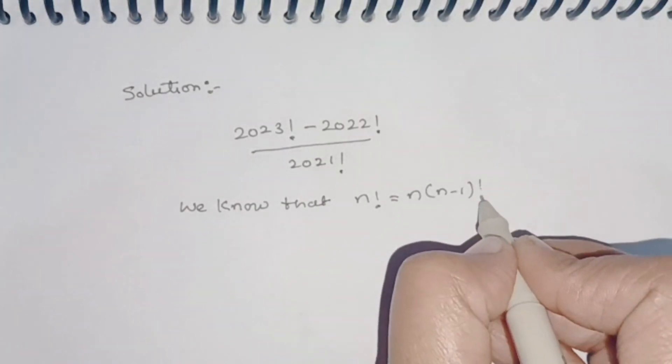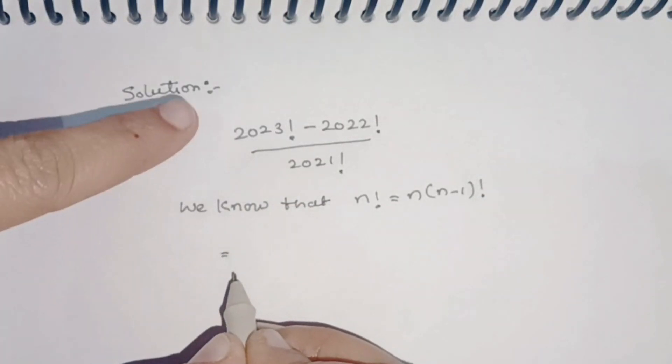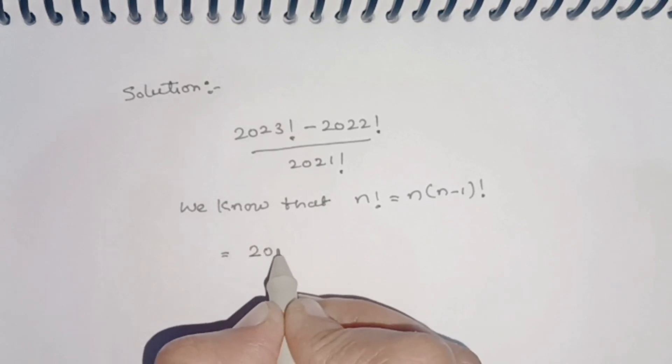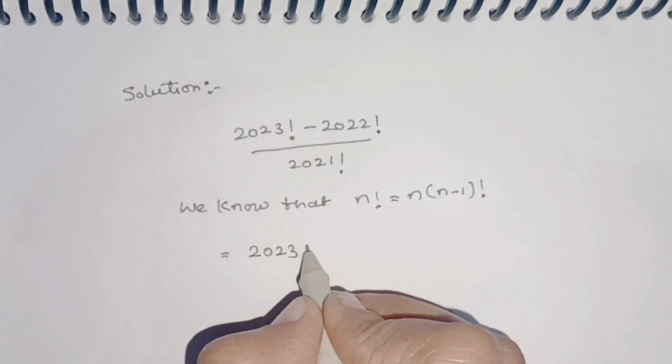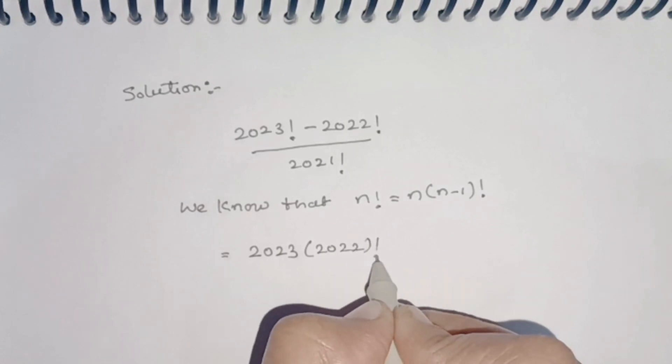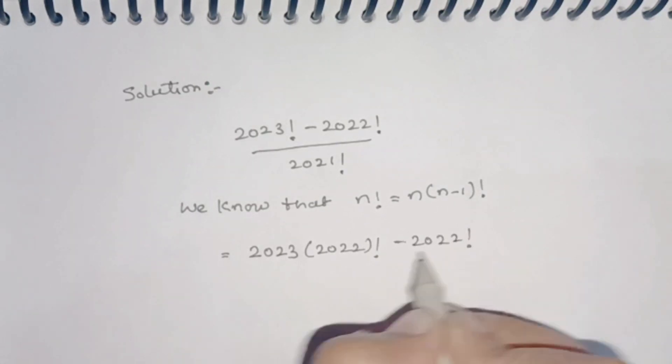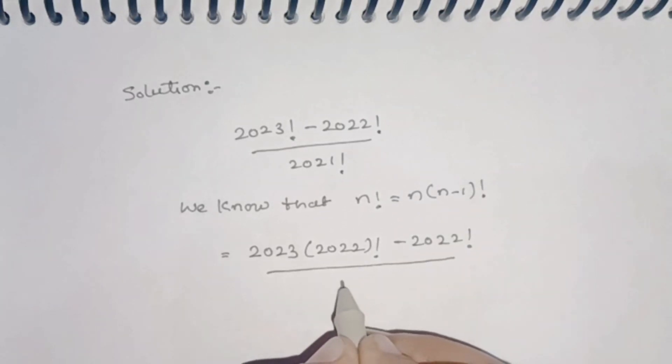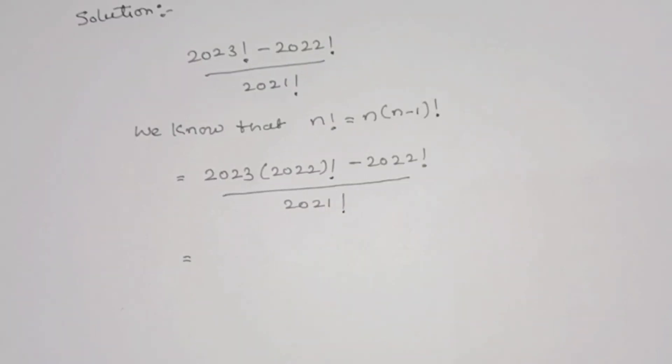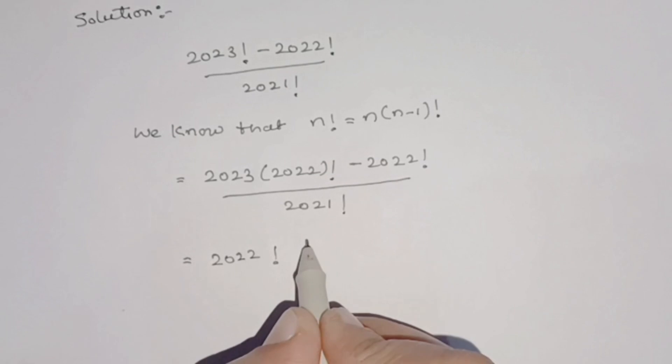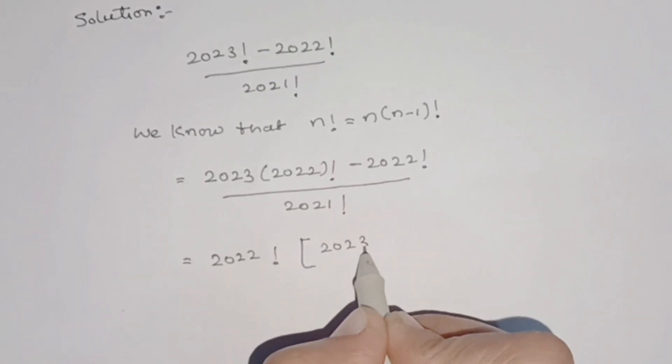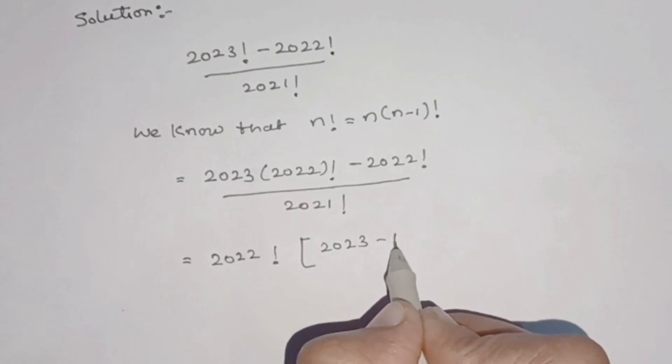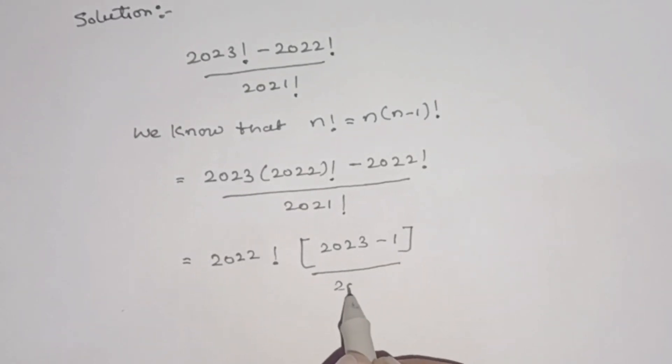Therefore, we can write 2023! as 2023 × 2022!. So we have (2023 × 2022! - 2022!) / 2021!. From the numerator, we can take 2022! common, so we get 2022! × (2023 - 1) / 2021!.